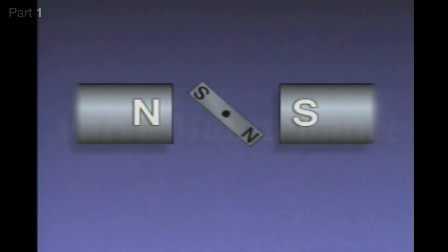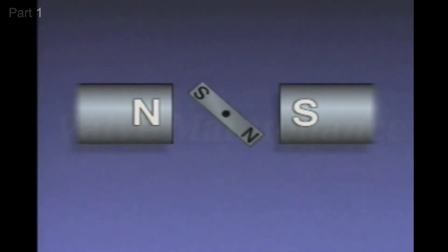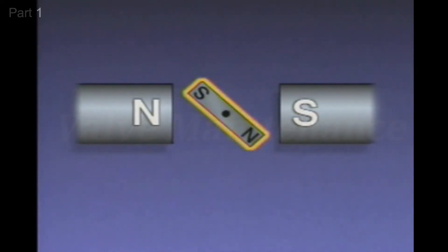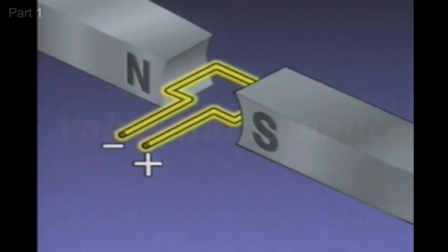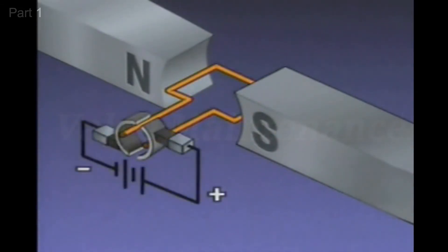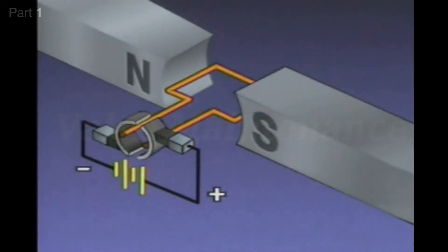To keep the bar magnet rotating, the polarity of either the bar magnet or the two permanent magnets must be changed. In a DC motor, what is changed is the polarity of the armature, which is represented by the bar magnet in this example. To see how this is done, we'll again use a loop of wire to represent the armature. And we'll add two components called brushes, and a conducting ring known as a commutator. The brushes are connected to the DC power source.